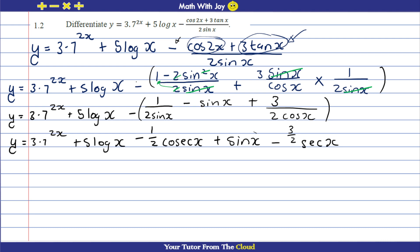Now in the next step we find the derivative. All the terms are split so we can differentiate a lot more easily. The derivative of three times seven to the power of 2x: we keep seven to the power of 2x, introduce ln(7) as the base, then multiply by 2 from the chain rule on 2x. Plus, the derivative of five·log₁₀(x) is 5 over x·ln(10).